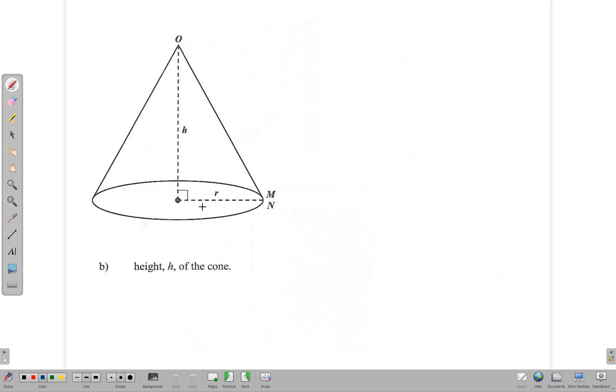Remember, for our cone we have this radius to be 5.6 centimeters, and this line, which was the radius of the circle forming the sector, was 12. We're told to find the height of the cone. If you notice, we have a right-angled triangle here, and the height is one side of our right-angled triangle, so we can use Pythagoras's theorem.